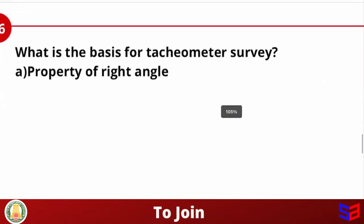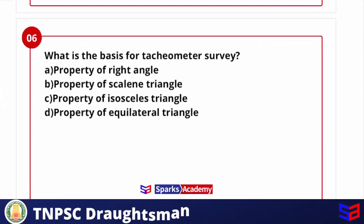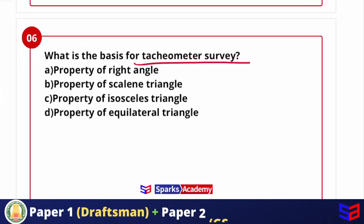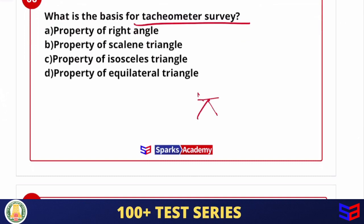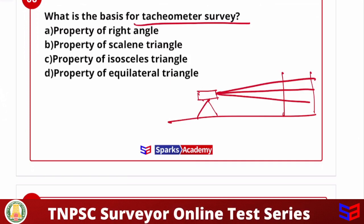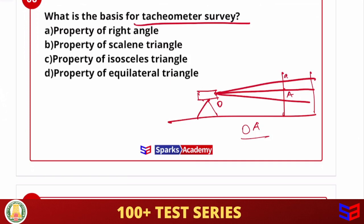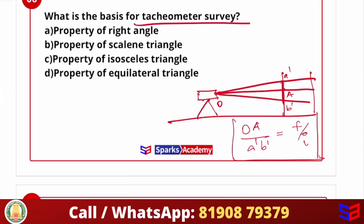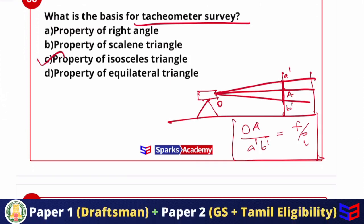Next question: what is the basis for tachymeter survey? Options are property of right angle triangle, scalene triangle, isosceles triangle, or equilateral triangle. Using the stadia intercept, the instrument and stadia rod form a triangle at a particular distance. Based on the isosceles triangle property, the distance is calculated as f divided by i. The answer is option C — property of isosceles triangle.